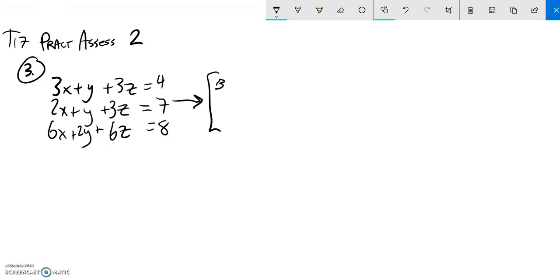So I've got three x's, one y, three z's, and a four. In the next equation, I have two x's, one y, three z's, and a seven. Third equation: six, two, six, eight.